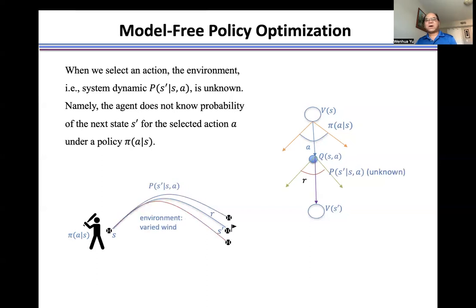Model-free policy means we don't know the system model. We start from state S, and the policy pi, we select action A. We don't know what's the probability from state S to state S prime, since the P is unknown. So we have to use our experience to find this P.